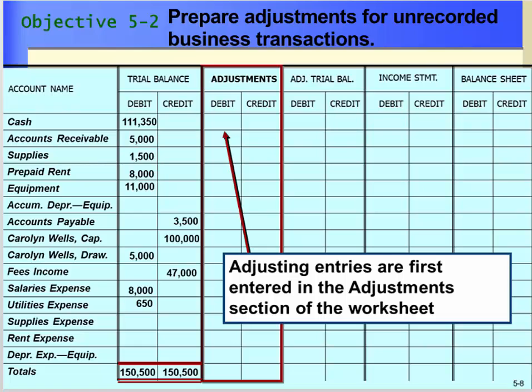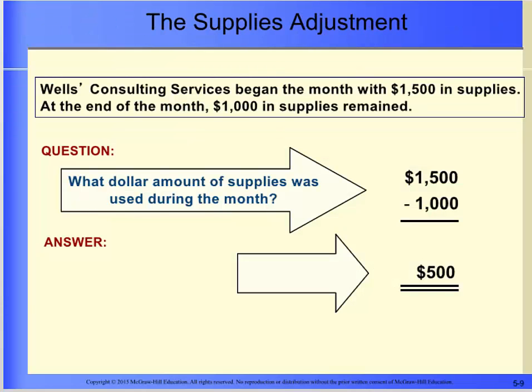Now it is time to move to the next set of columns. We need to prepare adjustments for unrecorded business transactions. The process of updating accounts at the end of an accounting period for unrecorded items that belong to the period is referred to as making adjustments or adjusting entries. The adjustments are made in the Adjustments column.